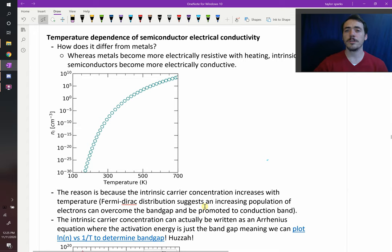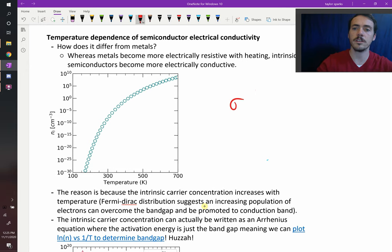Let's talk about the temperature dependence of semiconductor electrical conductivity. With metals, as you heat a metal up, it becomes less conductive because the atoms are moving and they scatter your carriers. So you see a reduction in the conductivity. If we plot conductivity against temperature for a metal, it would go down.